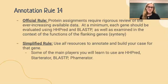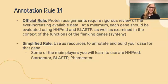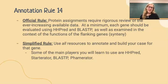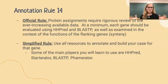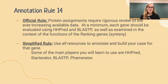The 14th rule reminds us to use all of the resources available to annotate and build our case for each gene. The main tools we'll be using are called HHPred, Starterator, BlastP, and Phamerator — databases with different functions that help inform our decisions for choosing a start and function for a particular gene. There's also a website called Phage Canine — Pecan — that compiles information from these databases onto one mega-site so we can use all this information without having to travel to different sites, making annotation much simpler and more efficient.